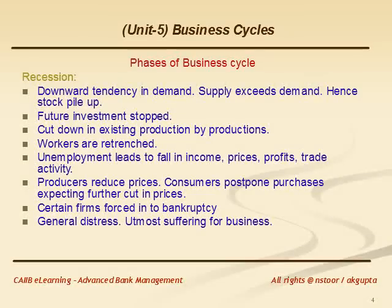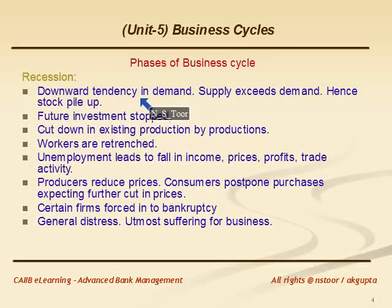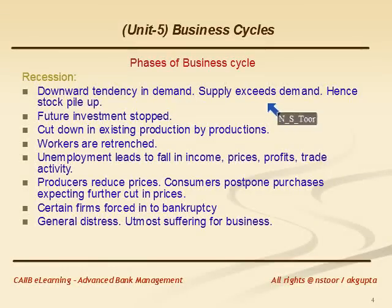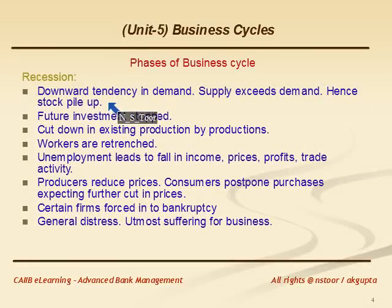Now let us see the next phase — recession. Recession is a downward tendency in demand. Here, supply is exceeding demand, so there is low demand and excessive supply. Hence, there is stock holding and stock pile-up, because suppliers are unable to sell the entire stock.